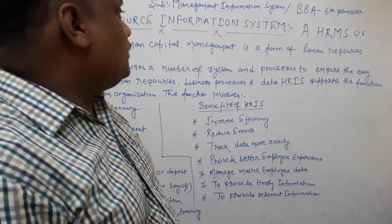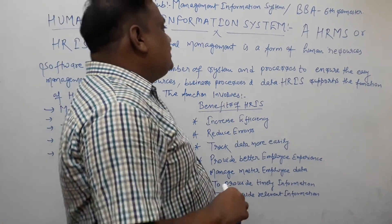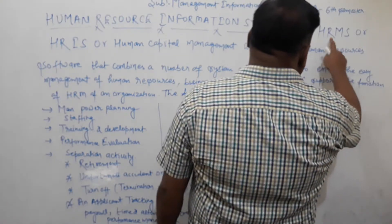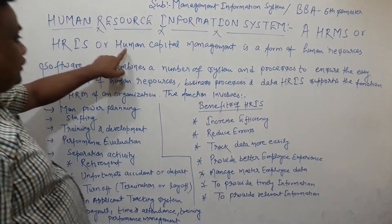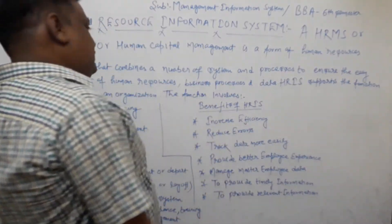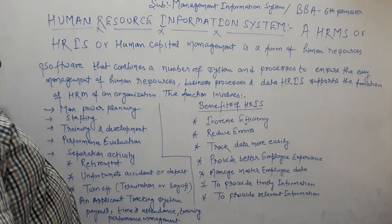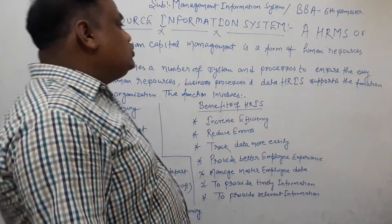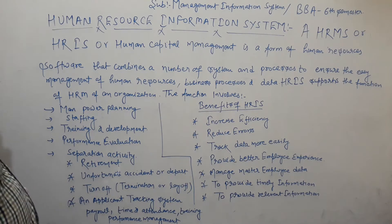Today our topic is the Human Resource Management System, also called Human Resource Information System (HRIS), and Human Capital Management. This is a form of human resource software — it is an IT software, a management system, that combines a number of systems and processes to ensure the easy management of human resources and business process data.